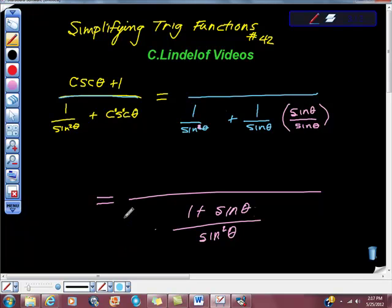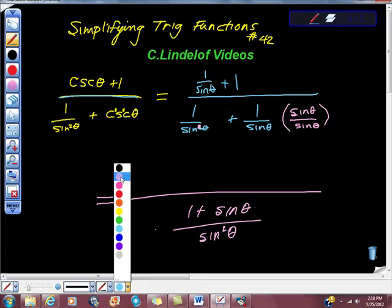Okay, with the top cosecant, as we said before, is 1 over sine theta plus 1. But to get a common denominator, like before, we're going to do sine theta over sine theta.